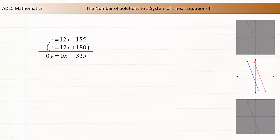Y minus y is 0y, 12x minus 12x is 0x, and negative 155 minus 180 is negative 335. This simplifies to 0 equals negative 335. This is a false statement because 0 does not equal negative 335. A false statement tells us that the system has no solution.